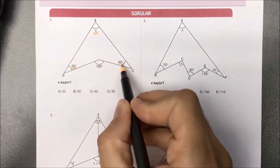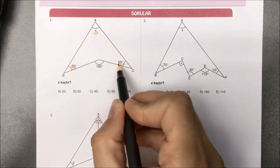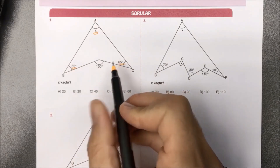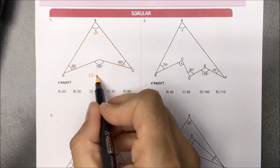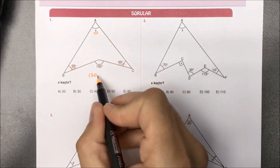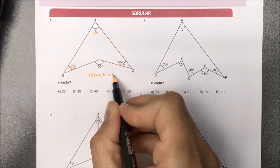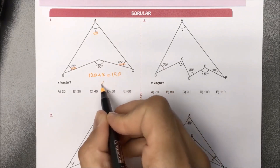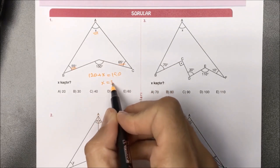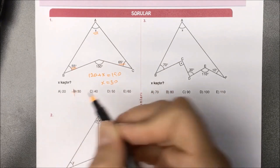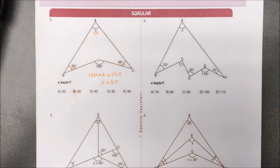Birinci sorumuz direkt bumerang kuralı: içerideki açıları topluyoruz. 55 ile 65 toplarsak 120 gelir. Tepedeki X ile topladığımızda 150 olacakmış. Dolayısıyla X buradan 30 derece olarak bulunmuş olur.